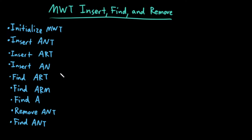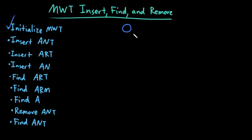So first in my sequence of steps that I'm going to do — these are just my current example that I'm going to use to demonstrate these. First I need to initialize my multi-way trie. What does that look like? I have to create an empty multi-way trie. I can just create a root node. So an initialized multi-way trie is just a root node, nothing else. Now that I have my initialized multi-way trie, I want to insert the word AND.